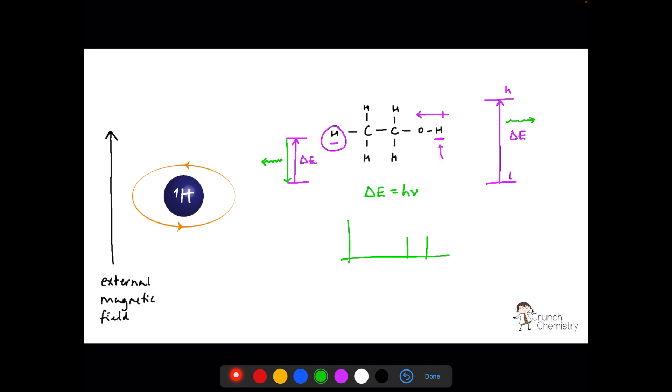So an NMR spectrum shows a number of signals that tell us how many different environments there are for either our hydrogen nuclei or our carbon-13 nuclei in the molecule. And we can use this information to piece together a structure.